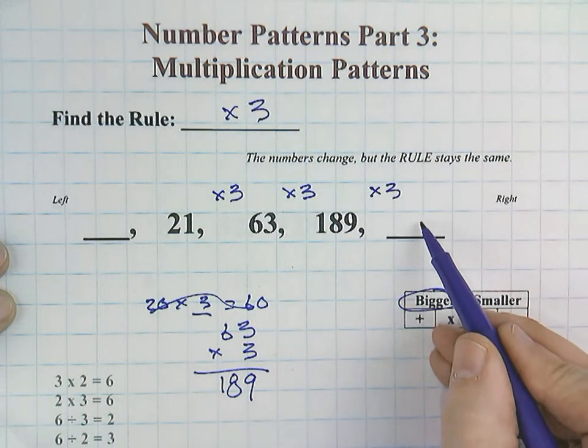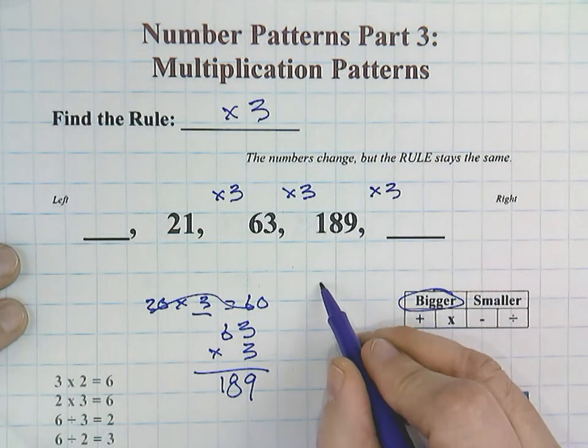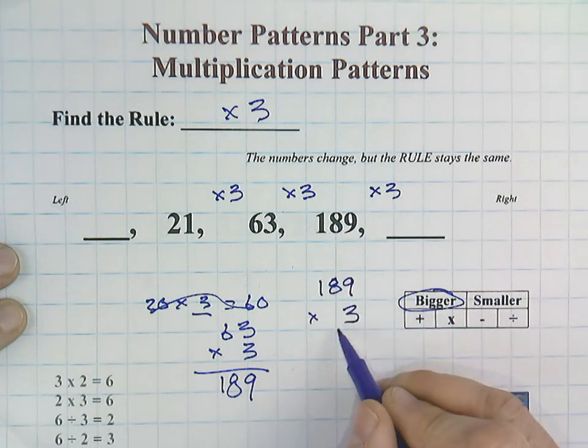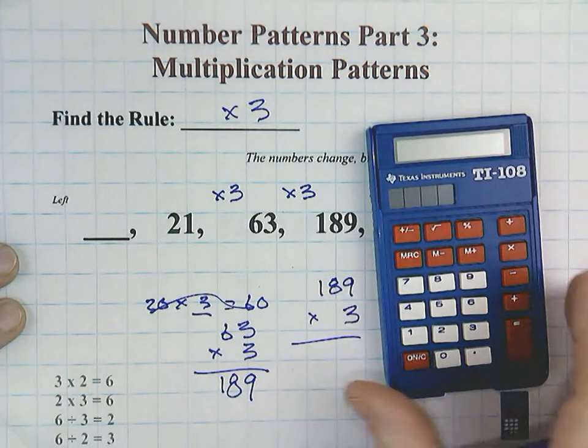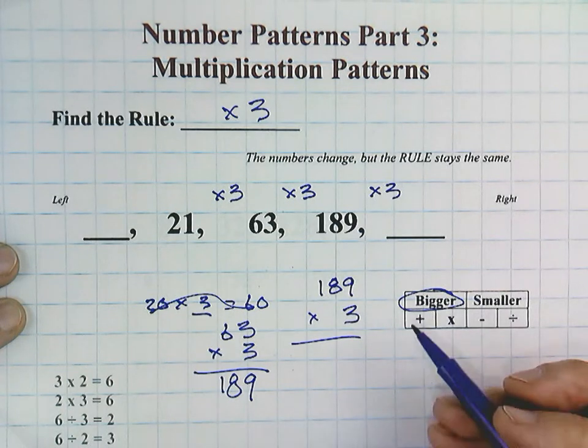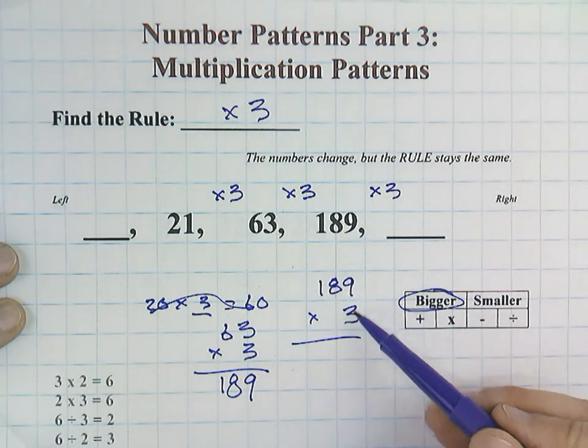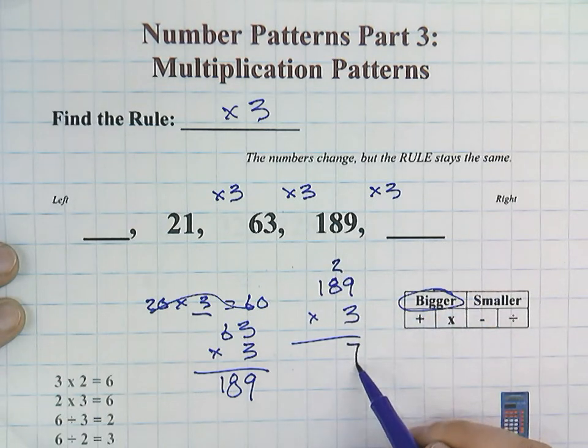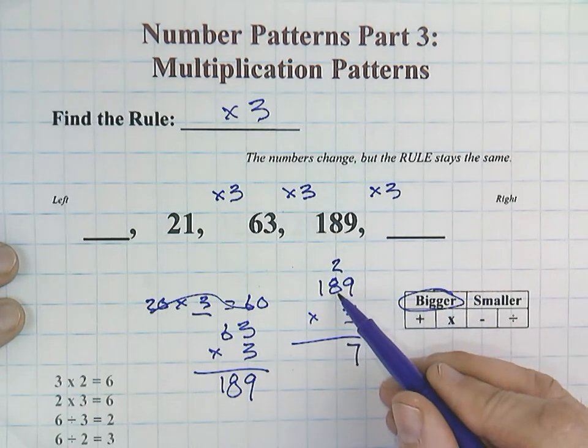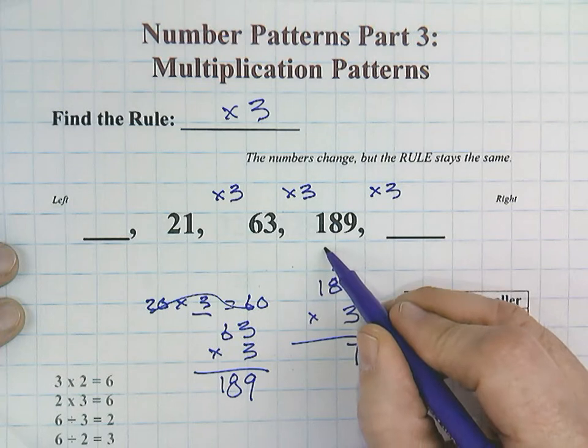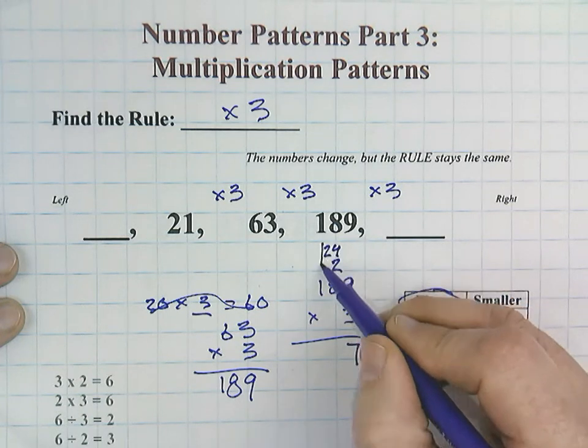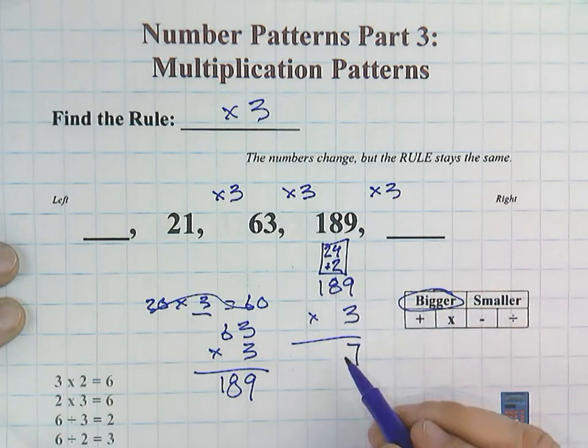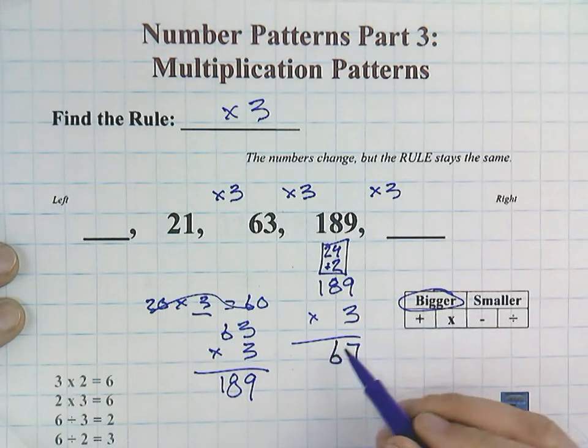And now our job is to find our number here. So 189 times 3. You could also use a calculator. I'm going to use regular multiplication today. 9 times 3 is 27. I'm going to regroup my 2. 3 times 8 is 24. Don't forget that we have to add that 2, right?